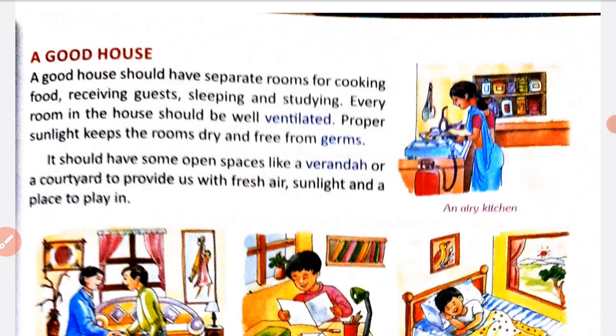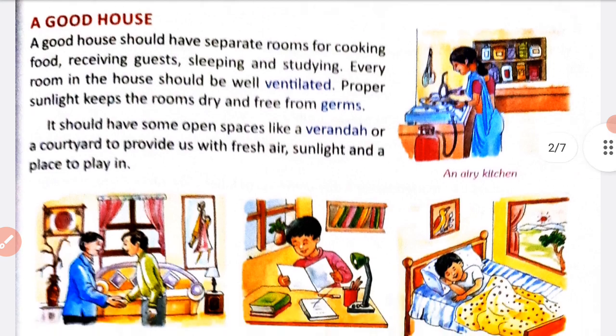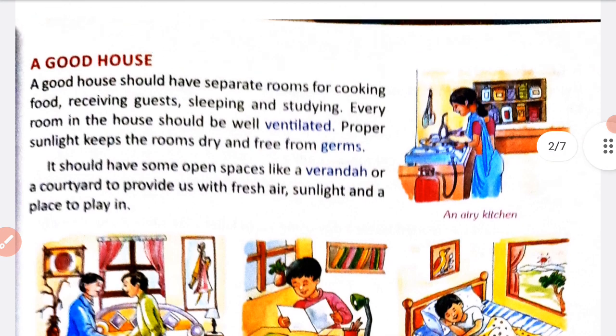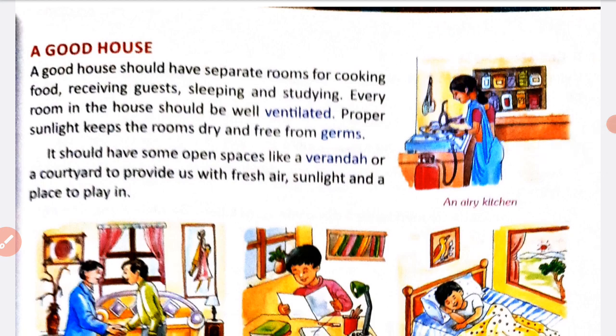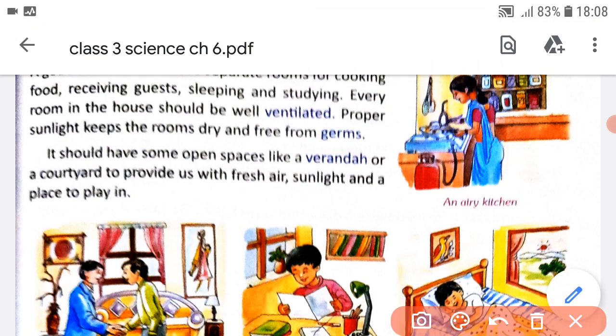Now moving on to our next topic: a good house. A good house should have separate rooms for cooking food, receiving guests, sleeping, and studying. Ek achche ghar mein sabhi rooms separate hoon — kitchen separate ho, guest receive karne ke liye alag room ho, sleeping ke liye bedroom aur study room. Every room in the house should be well ventilated. Proper sunlight keeps the room dry and free from germs.